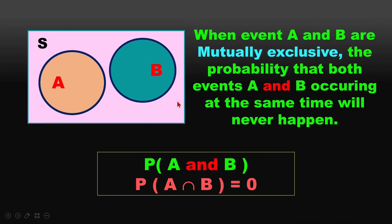The second case is when event A and B are mutually exclusive. Mutually exclusive means they cannot happen together, so the probability that both event A and B occur at the same time will never happen. If you look at the Venn diagram, these two events will never intersect. Therefore, A and B happening together is equivalent to zero.